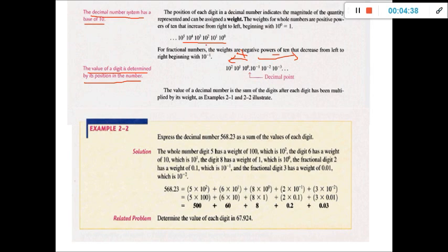For the positive part, same as the previous example — weight is determined by position. But after the decimal point, we multiply by 10 to the power of minus 1, 10 to the power of minus 2, 10 to the power of minus 3, and so on. We know 10 to the power of 0 is 1, 10 to the power of 1 is 10, and 10 to the power of minus 1 means 1 divided by 10, which equals 0.1.